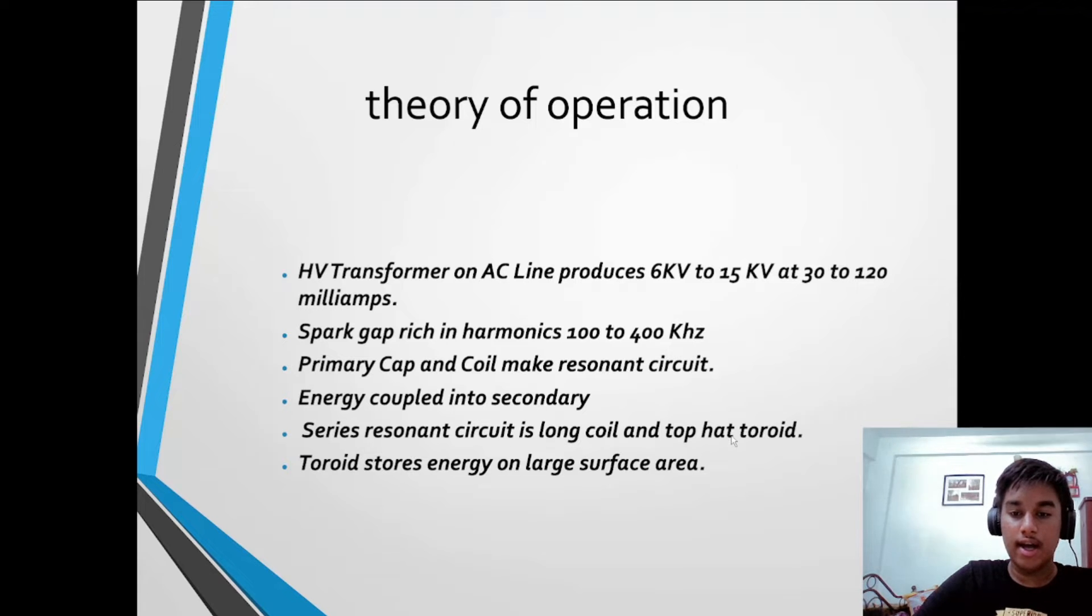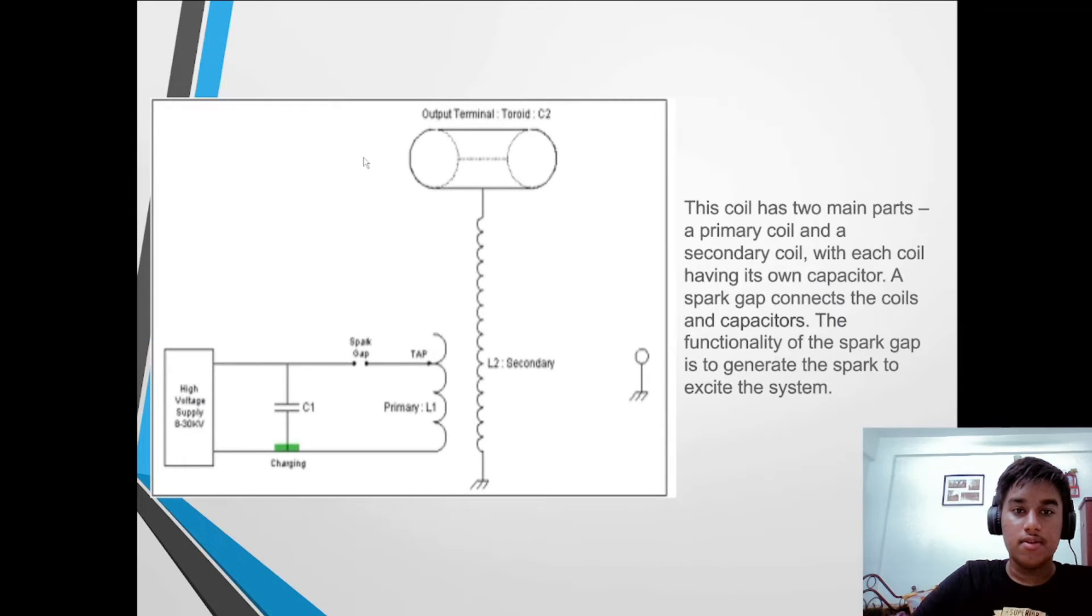It's a long coil and top hat toroid. Toroid stores energy on large surface area. This coil has two main parts: a primary coil and secondary coil, with each coil having its own capacitor.